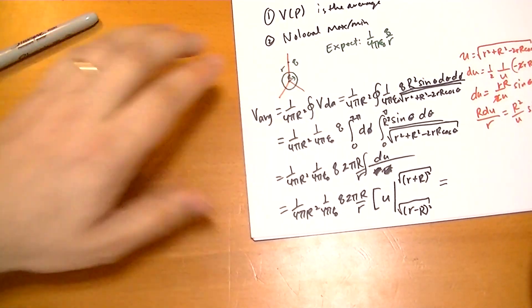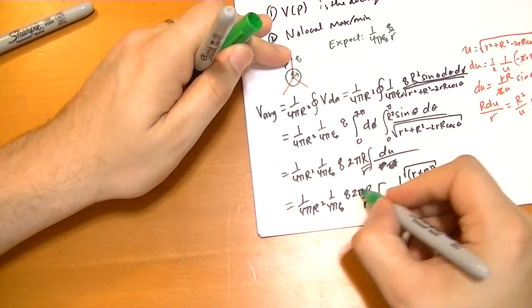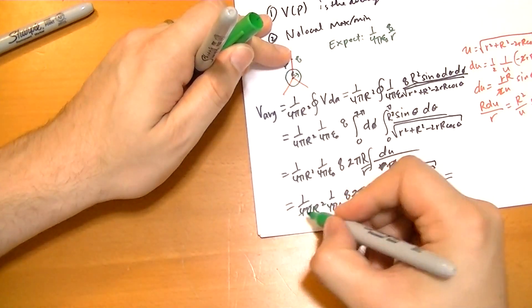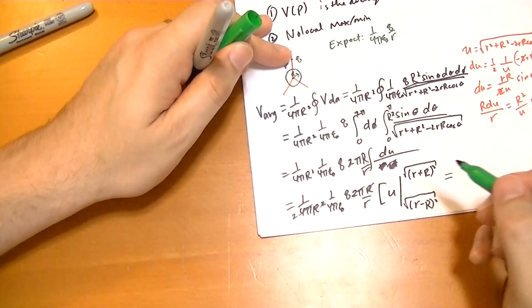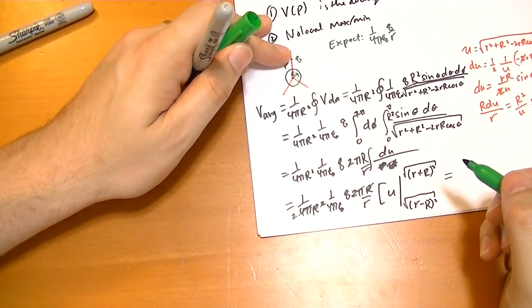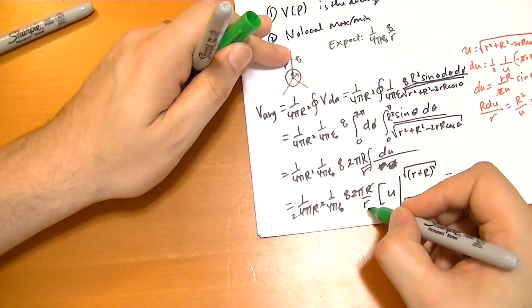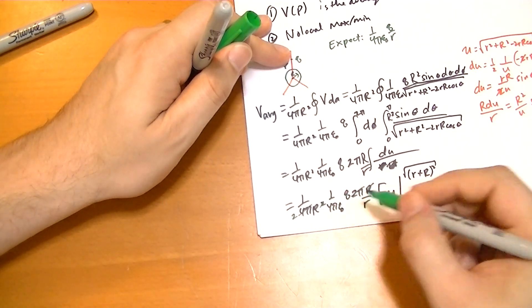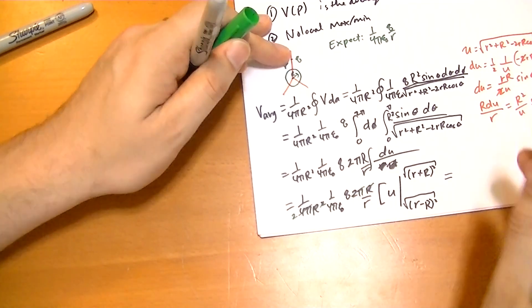And so that equals, let's start canceling some terms out here. So 2 pi cancels leaving a 2. r cancels. We have an r on the bottom. We have q over r. We have 1 over 4 pi epsilon naught. 1 half r.